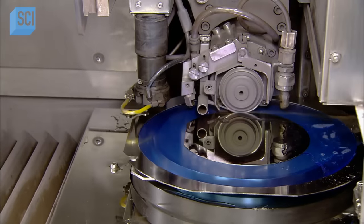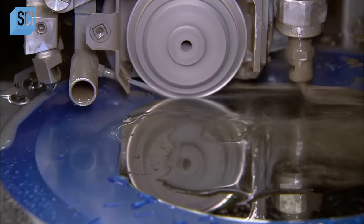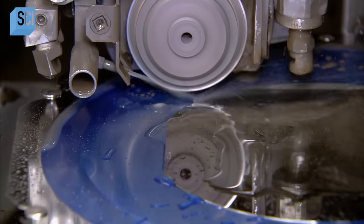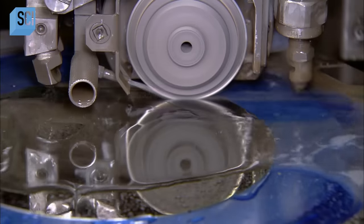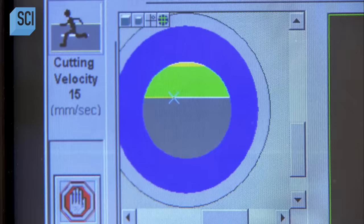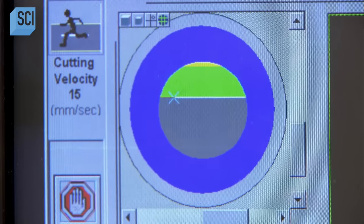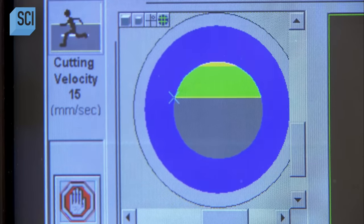Next, a computerized saw cuts grooves into the top wafer only, while a steady stream of water keeps the dust down. The saw exposes the aluminum layer on the bottom wafer, something that will allow each sensor to make an electrical connection.